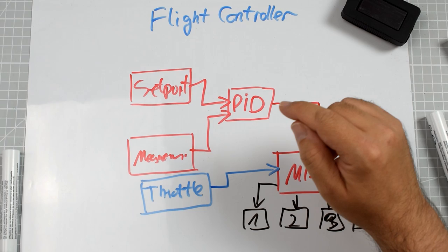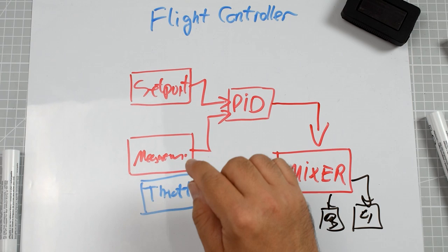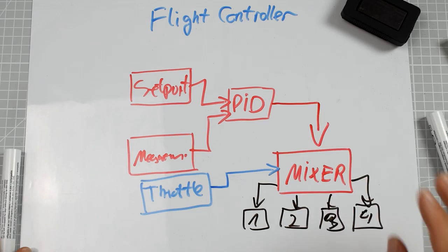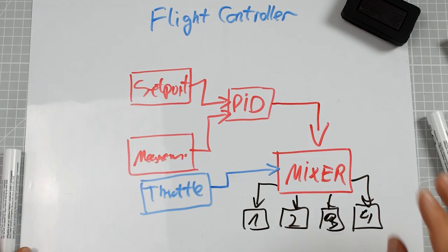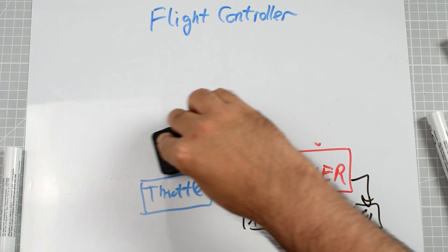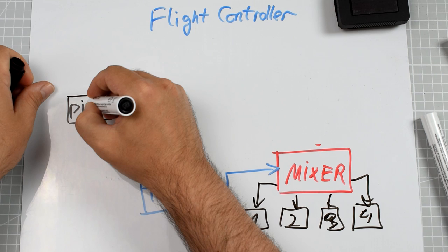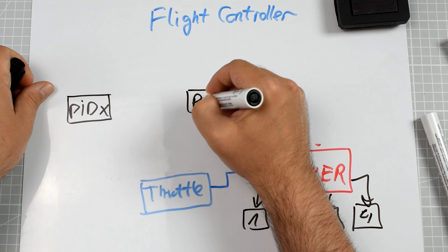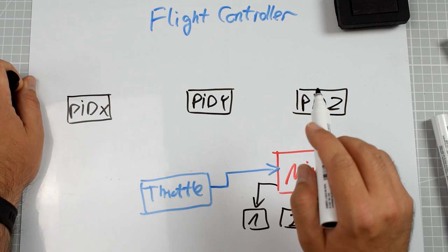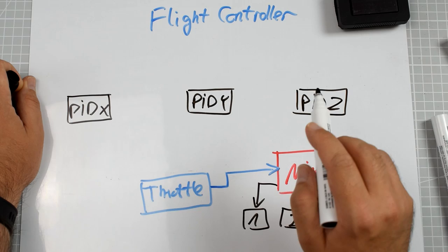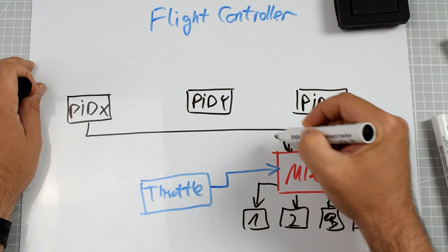Now it's time to complicate the graph, because this is not really how it works. There is not one PID controller, not one set point, and not one measurement. There are three PID controllers for each axis separately, three measurements, and three set points. We can change this into PID X, PID Y, and PID Z — where X is for roll, Y is for pitch, and Z is for yaw.